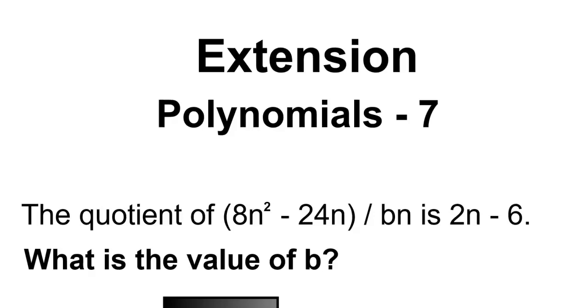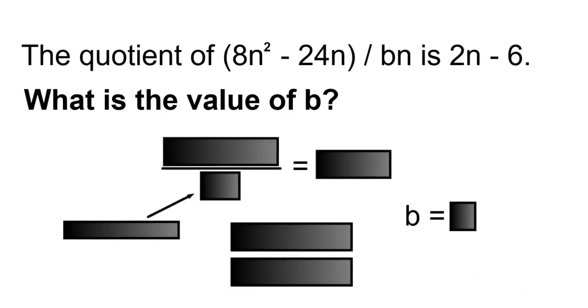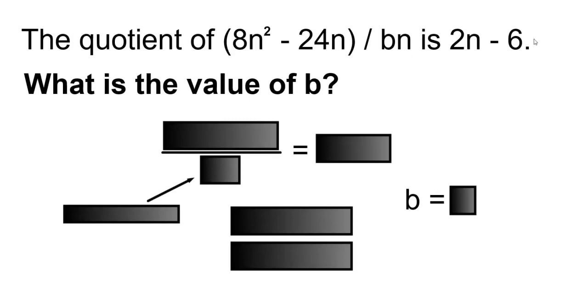Extension Polynomials Number 7. The quotient of 8n² - 24n divided by b times n is 2n - 6. What is the value of b?